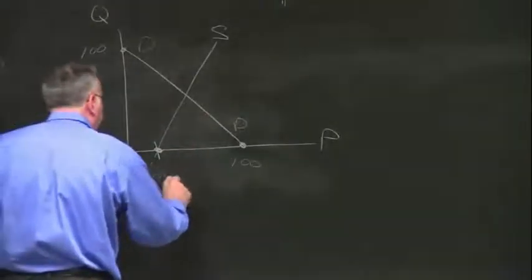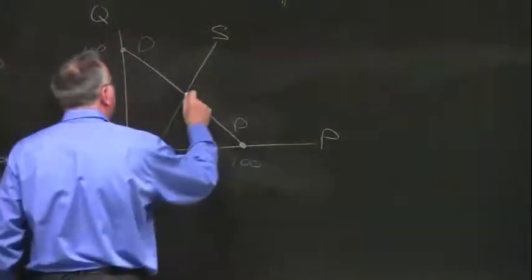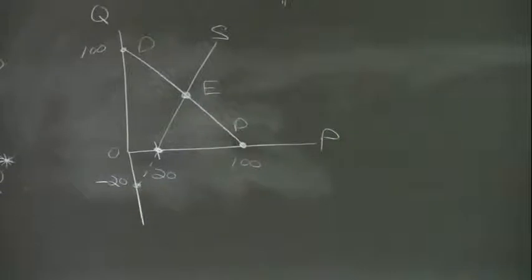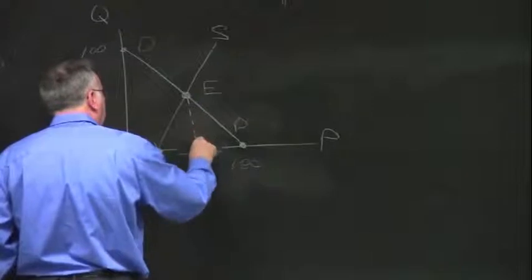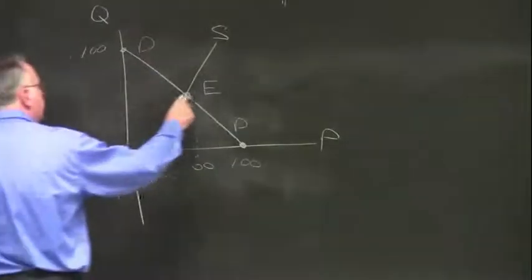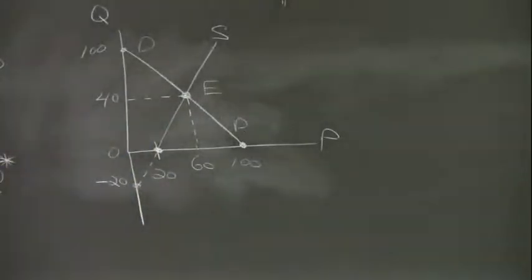Notice the supply curve and the demand curve intersect — this is what we call the equilibrium point. Let's label this with a capital E for equilibrium. At what price do these two curves intersect? 60 — so the equilibrium price is 60. And what is the quantity corresponding to that equilibrium point? 40 — that's our Q star. If you draw a horizontal line at 40, that's the equilibrium point.